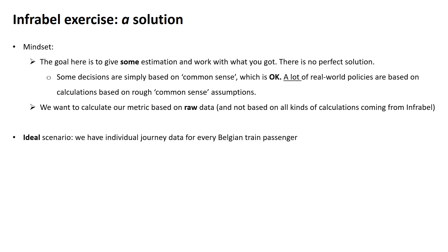In an ideal scenario, we would have individual journey data for every Belgian train passenger — we would know that person A takes a train in Ghent, goes to Brussels Central, then takes another train to Leuven. But we don't have that. In Belgium, we only have a very rough estimation of how many people board a train on a particular day. We can't follow individuals. So let's go back to the bare minimum.